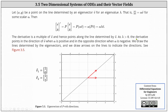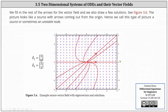This indicates the derivative is a multiple of the eigenvector V and hence points along the line determined by eigenvector V. As lambda is greater than zero, the derivative points in the direction of the eigenvector V when alpha is positive, and in the opposite direction when alpha is negative. So we draw the lines determined by the eigenvectors, sketched in black, and then draw arrows on the lines to indicate the directions. Notice the arrows are pointing in the direction of the eigenvectors because both eigenvalues are positive. We fill in the rest of the arrows for the vector field and draw a few solutions in figure 3.6. The picture looks like a source with arrows coming out from the origin, hence we call this type of picture a source or sometimes an unstable node.